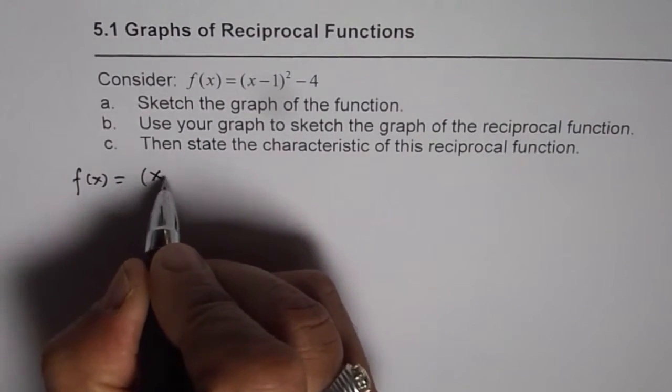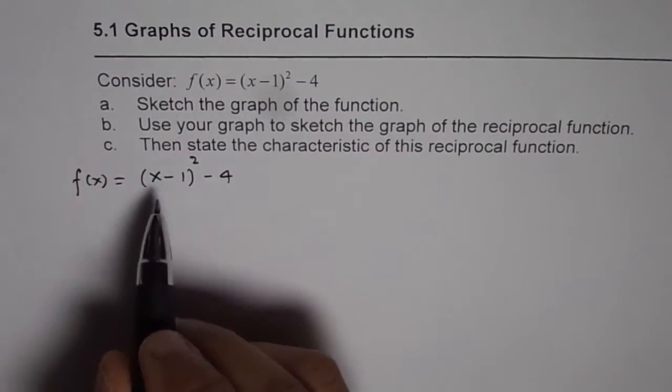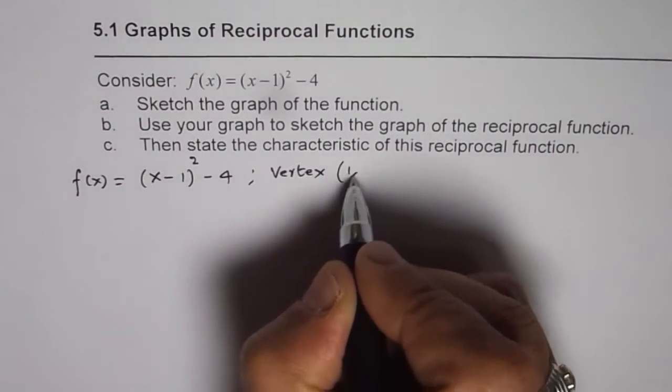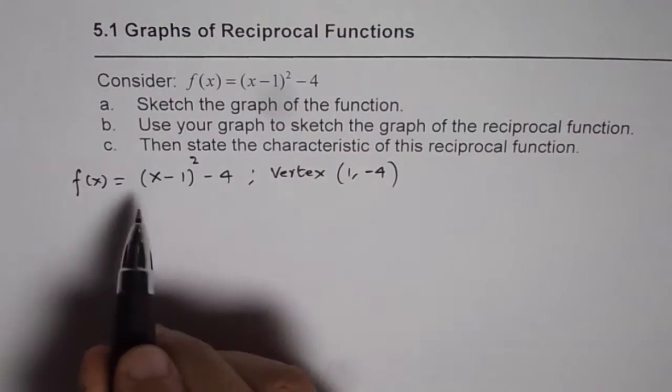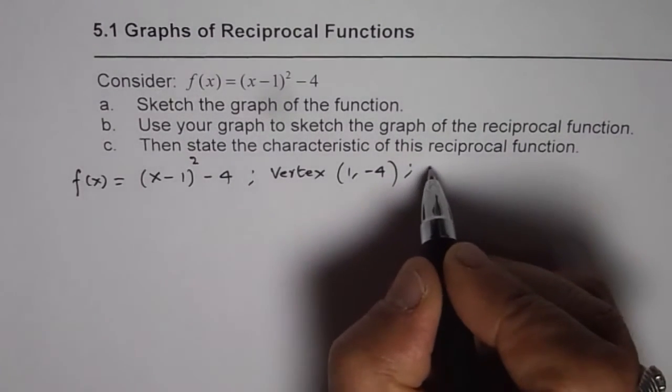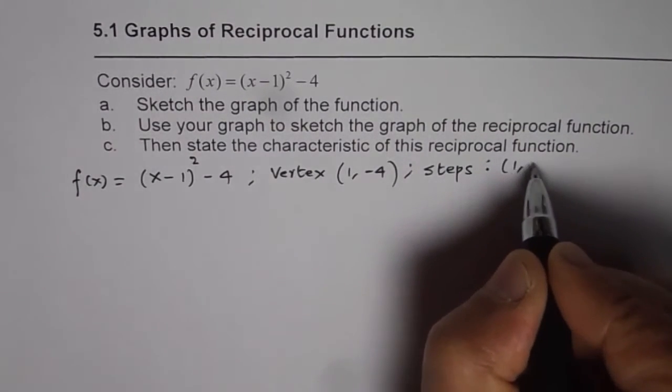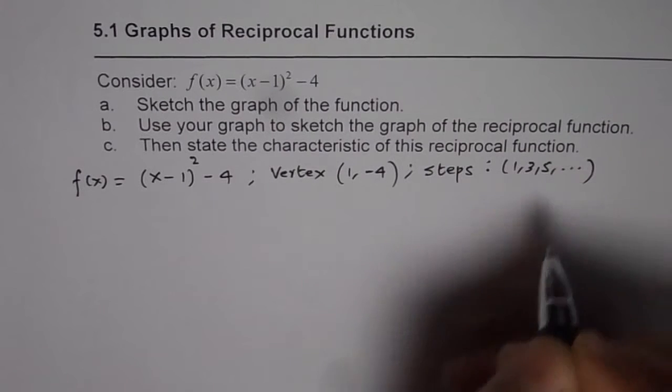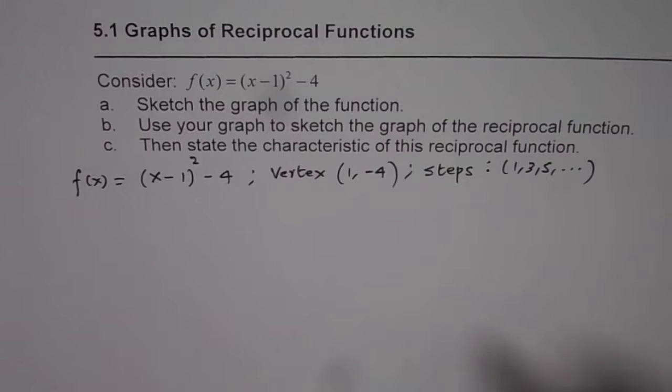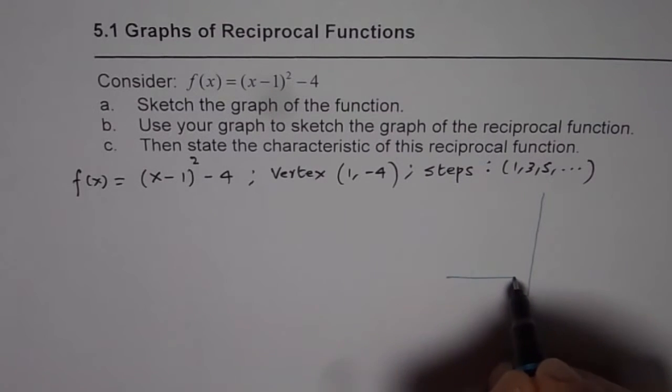Let's begin by writing the function itself. The function is a parabola given in vertex form: (x - 1)² - 4. So the vertex for the function is (1, -4). We also know that the steps are 1, 3, 5, 7. These are two critical things for any parabola: vertex and steps 1, 3, 5, 7. Since a is 1, we don't have to multiply by any stretch factor.